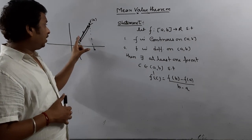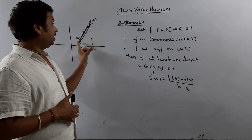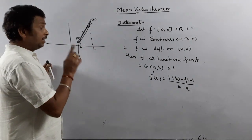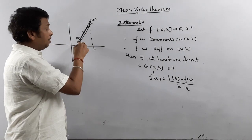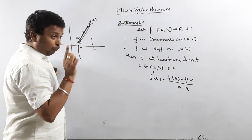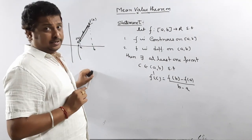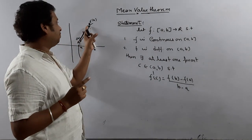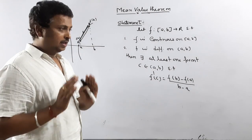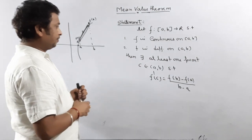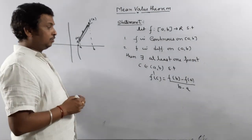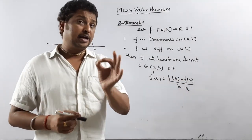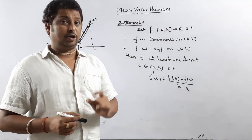If the function is continuous on [a, b] and differentiable on the open interval (a, b), then at least one point c exists between a and b where the tangent drawn to the curve is parallel to the chord joining points a and b. That is the geometrical meaning of the Mean Value Theorem.